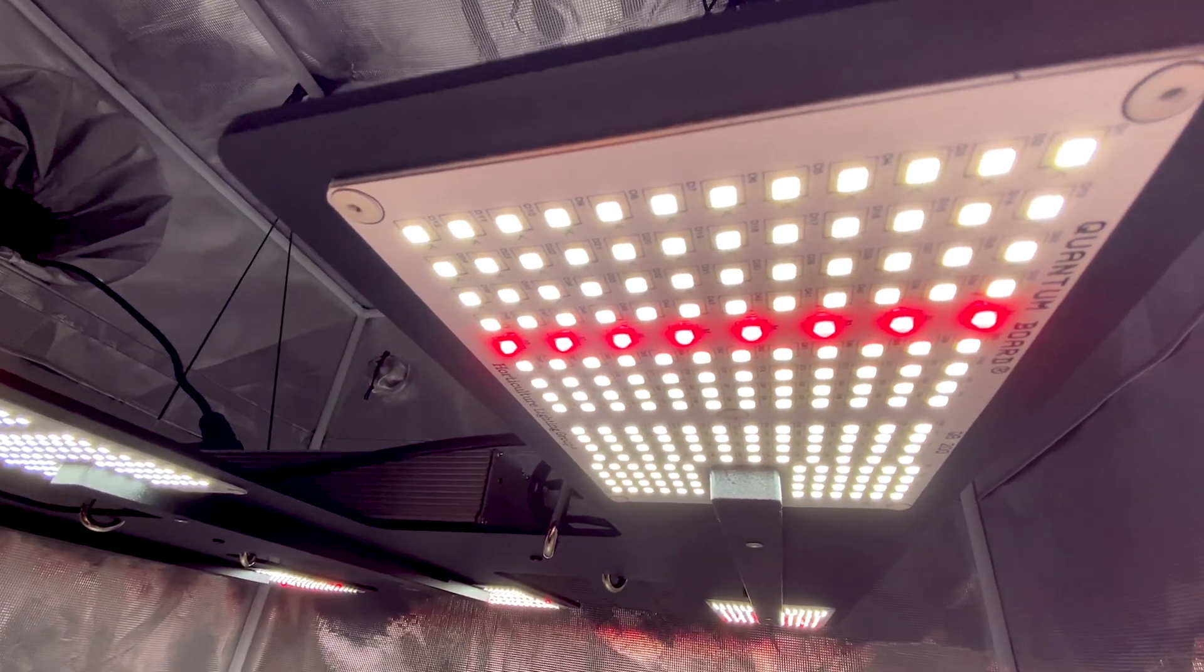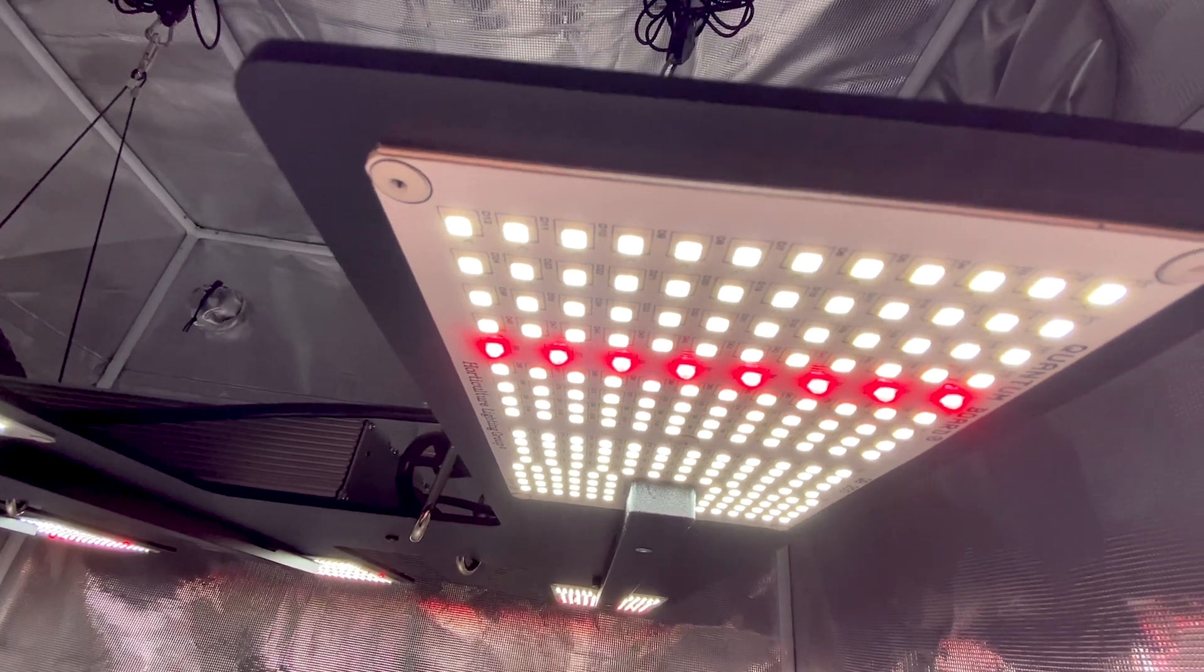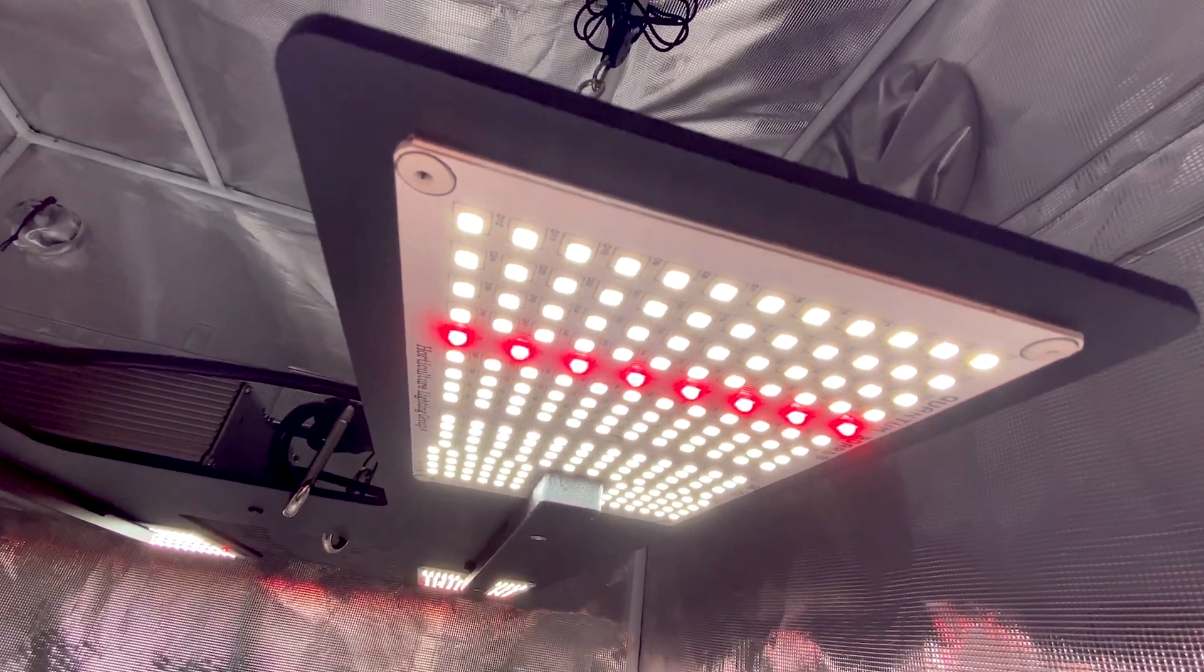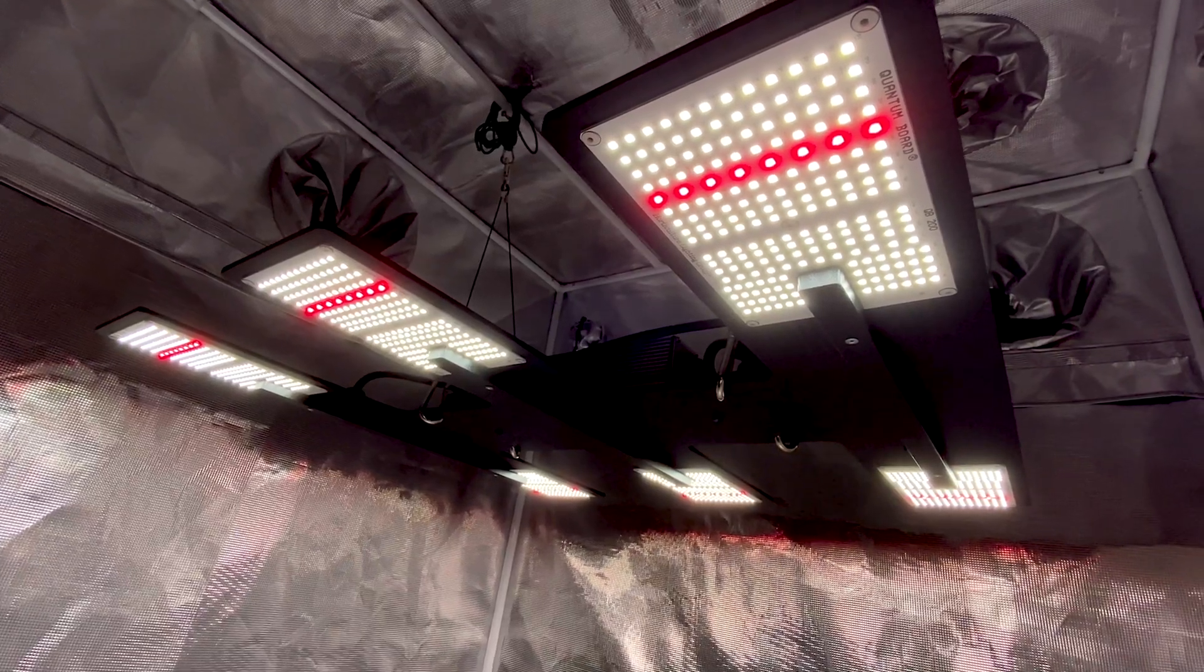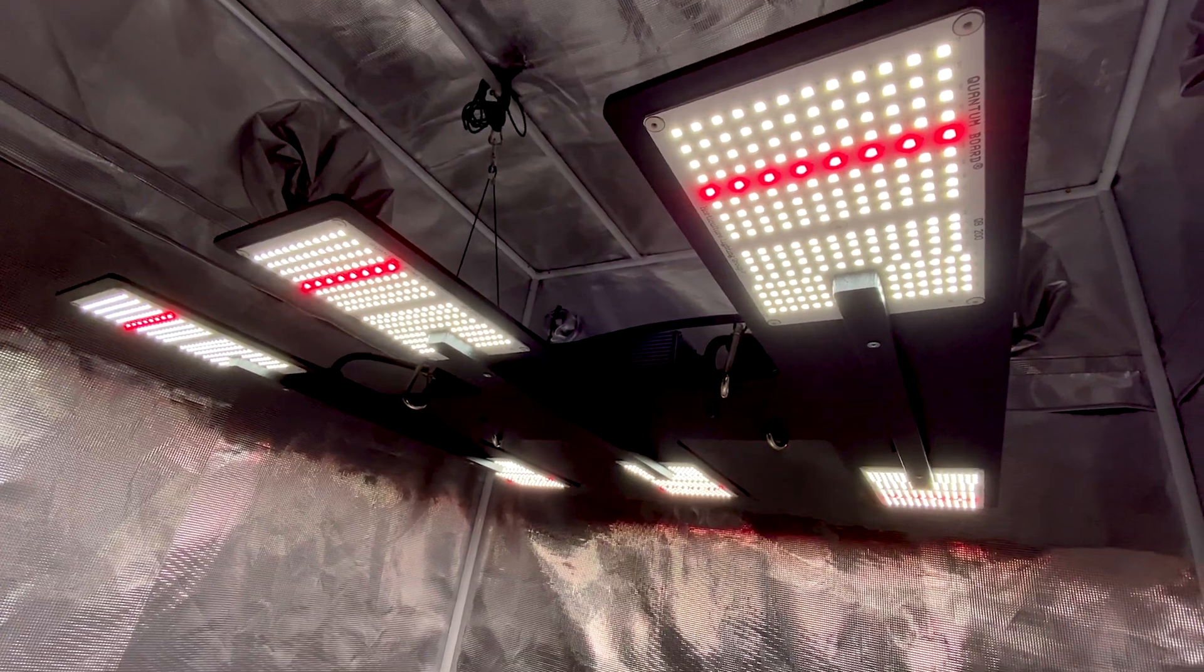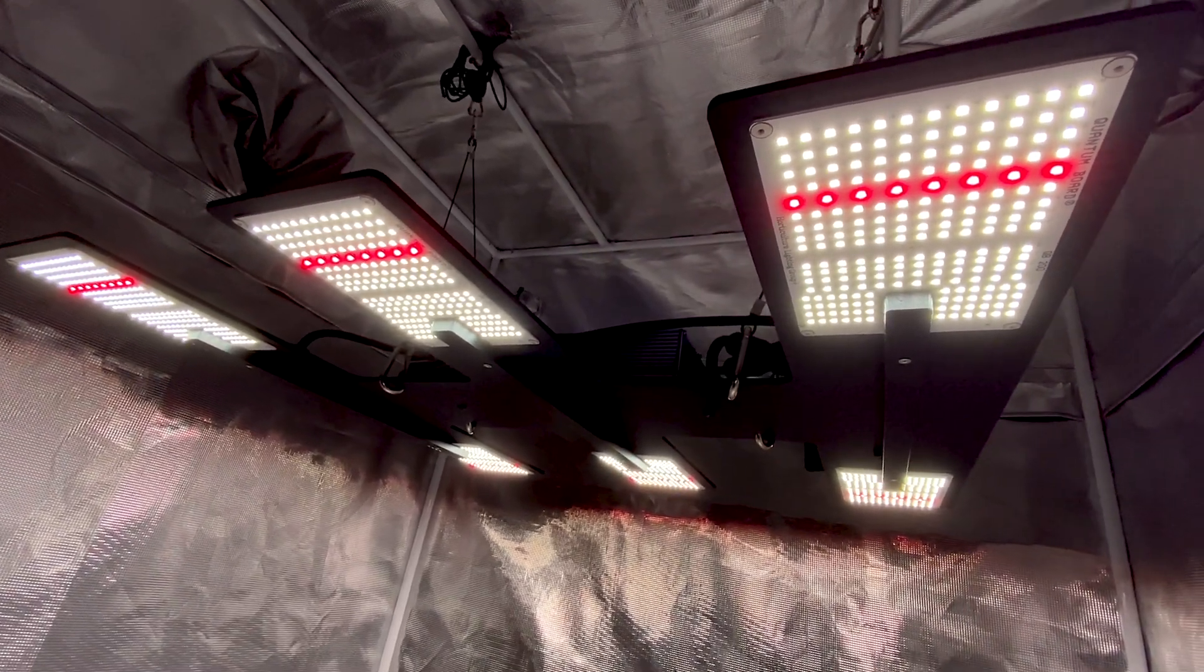Right now I can understand why these boards are not as efficient as the QB288s and QB648 Diablos. It's that the lower diode count on the QB200s compared to these other boards lowers the efficiency and light output. Packing more diodes into a board increases the board cost and would lead to a more expensive fixture.